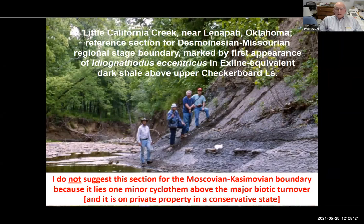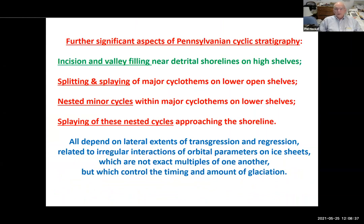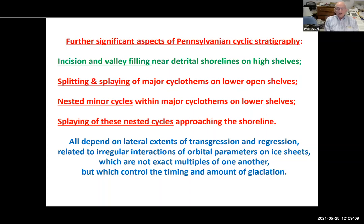I do not suggest this section for the Muscovian-Kasimovian boundary because it lies one minor cyclothem above the major biotic terminal and is on private property in a conservative state. In summary, significant aspects of Pennsylvanian cyclic stratigraphy include: incision and valley-filling near the detrital shoreline on high shelves; splitting and splaying of major cyclothems on lower open shelves into minor cyclothems; and nested minor cycles within major cyclothems on lower shelves, splaying as they approach the shoreline — all dependent on lateral transgression and regression driven by irregular interactions of orbital parameters on ice sheets.